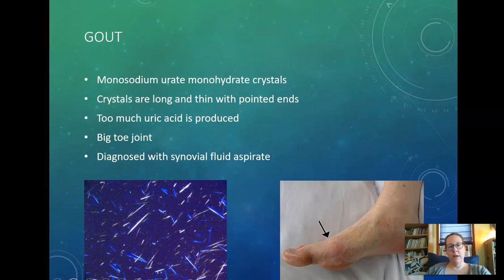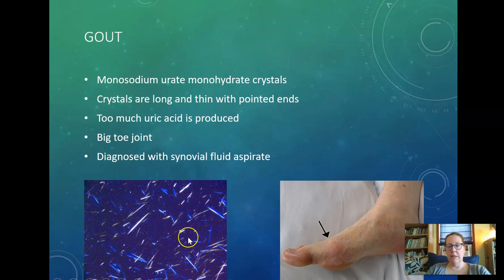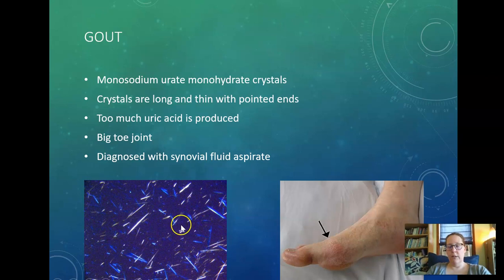Gout is associated with arthritis but usually involves swelling of just one joint, especially the big toe. You see monosodium urate monohydrate crystals — these are needle-like, long and thin with pointy ends. They form from excess uric acid depositing in joints, causing pain. The best way to diagnose gout is a synovial fluid aspirate — using a polarized microscope you can see these crystals clearly and detect their type. You would also see an increased uric acid level.